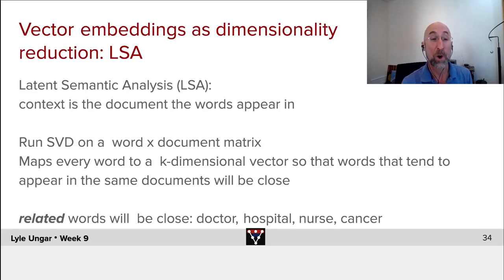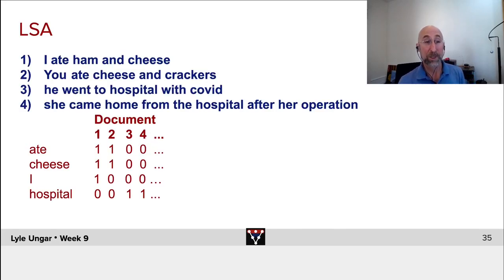This will make all related words close. Words like doctor, hospital, nurse, cancer, will tend to show up in the same documents. They will then be related. They will then show up together and have similar embeddings. So let's look at that.